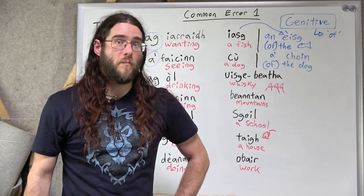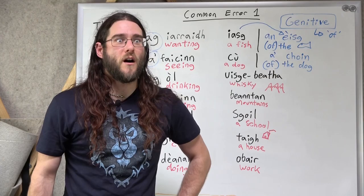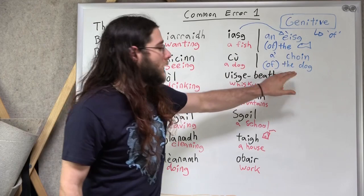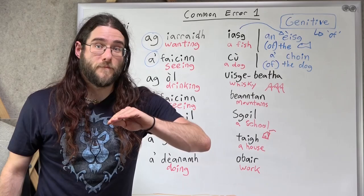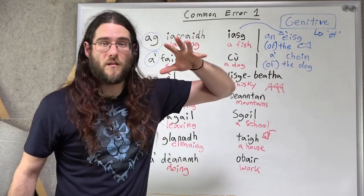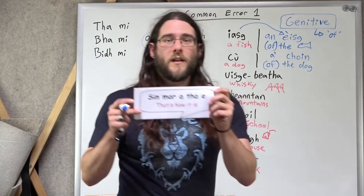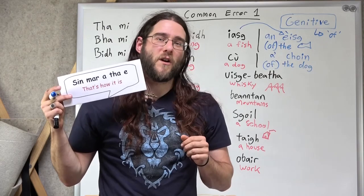So, perhaps in my Foundations course, you've seen the video about the dog and the pie. How the person sees the dog about to get that pie. Tha mi a' faicinn a' choin. The man was seeing of the dog. Of the dog. It's of the dog. So, the word dog changes to mean of the dog. Yeah. Sin mar a tha. Sin mar a tha.